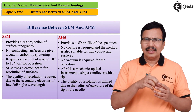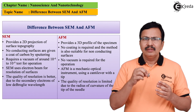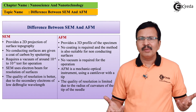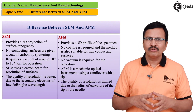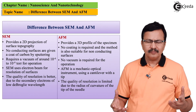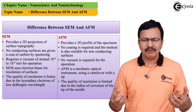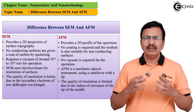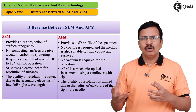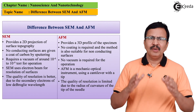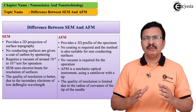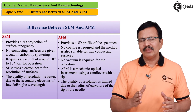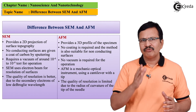AFM has an advantage here: AFM does not require any sort of vacuum for its operation because it does not use any kind of electrons. It is only an optomechanical system of operation, and that is why AFM does not require any vacuum. This is one of the biggest advantages of AFM.